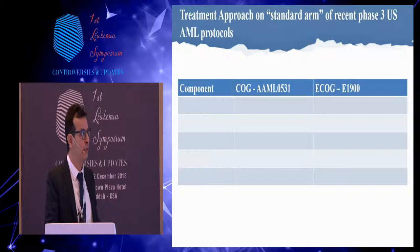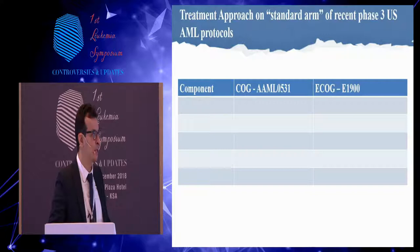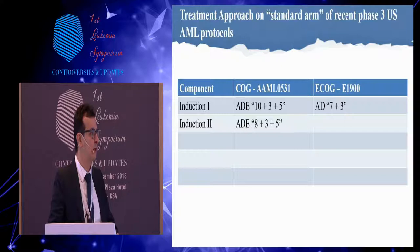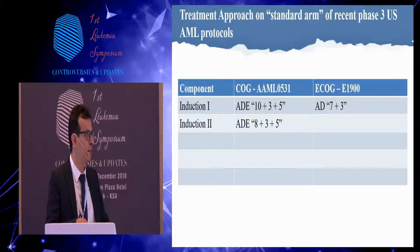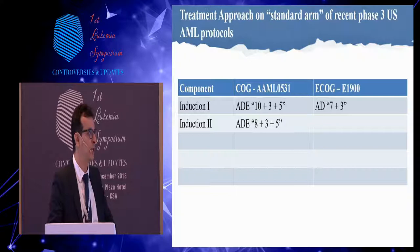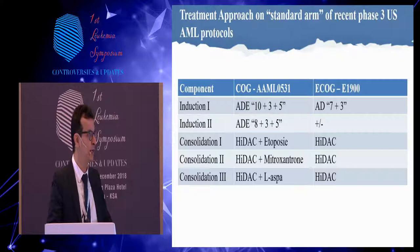Dissecting the standard arms of North American trials — AAML0531 for the Children's Oncology Group versus ECOG A1900 for adults — induction in pediatric differs from the classic 7+3. We use etoposide as well, given for five days. Cytarabine is given for 10 days in induction one and 8 days in induction two, with three doses of daunorubicin at 50 mg. For consolidation in the pediatric protocol, multiple agents are used: high-dose cytarabine is the main player, along with etoposide, mitoxantrone, and L-asparaginase. In adults, it is classic high-dose cytarabine.